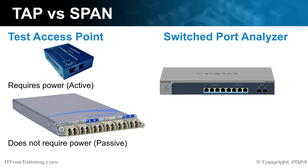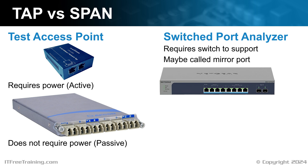SPAN, or Switched Port Analyzer, in contrast to TAP, requires a network switch to support it. This may also be referred to as a mirror port. SPAN does not appear on the exam objectives but is discussed in the official study guide. In the real world, in most cases, SPAN will be used over TAP due to it simply being the more convenient option, though there are some differences between the two.